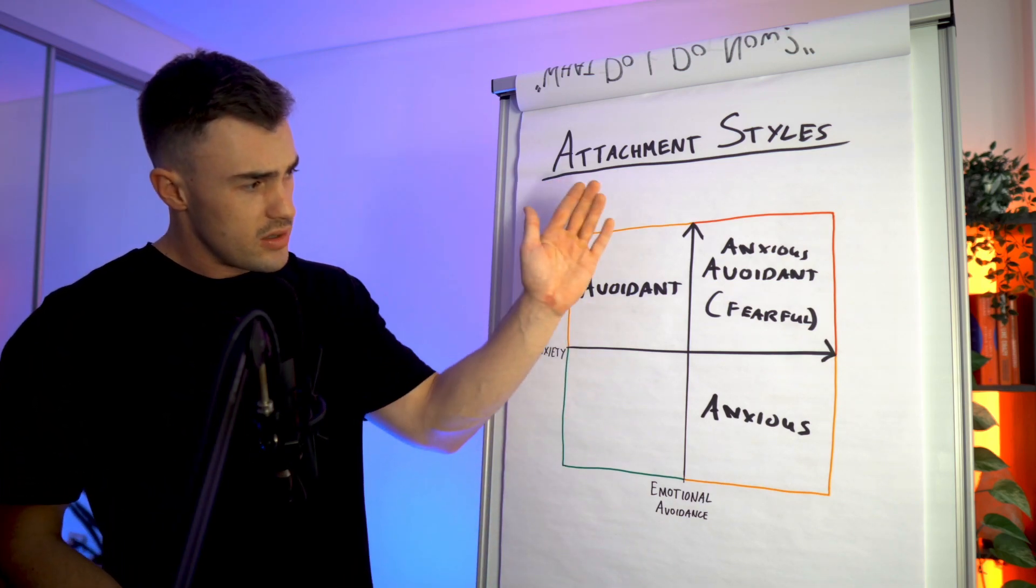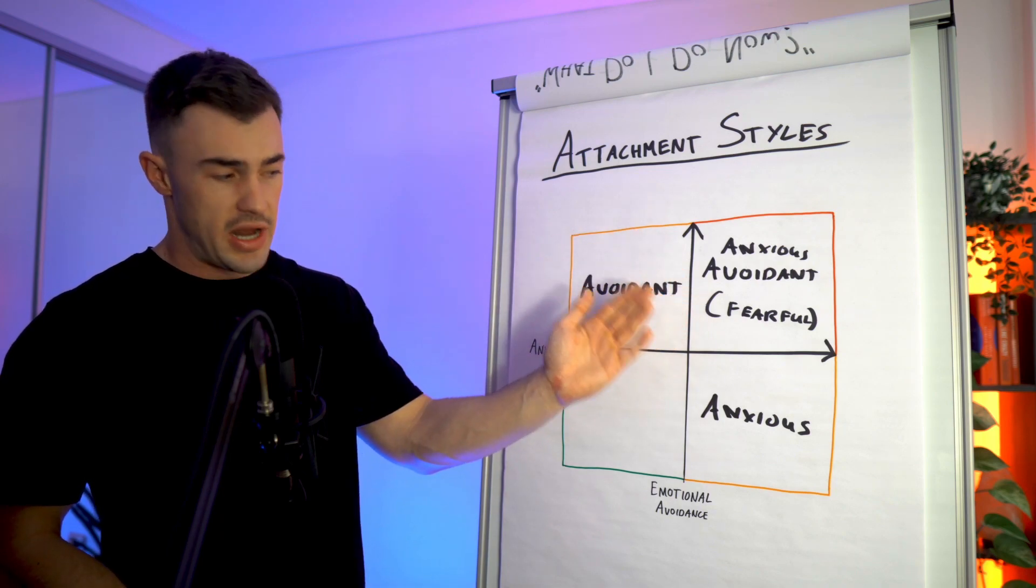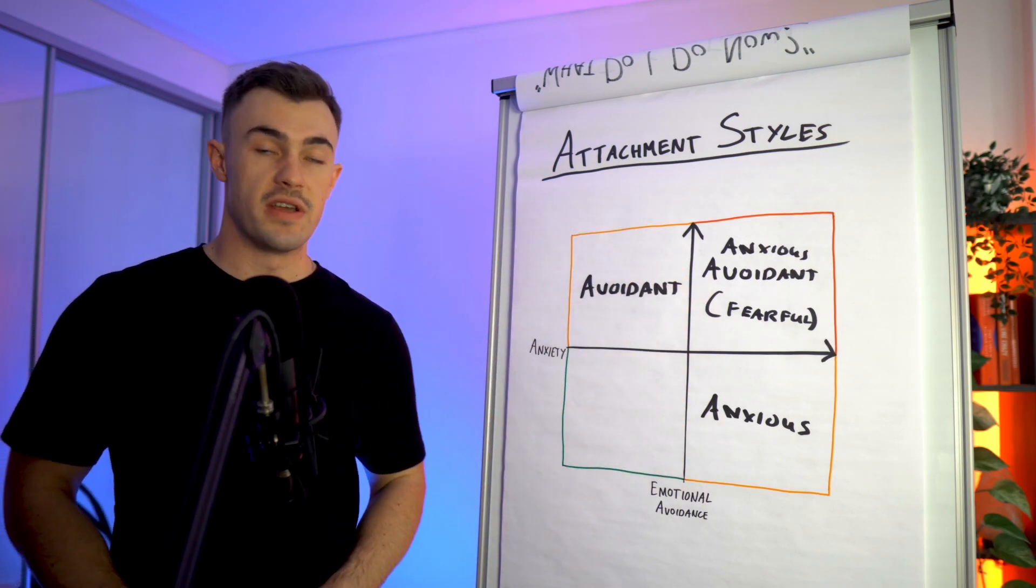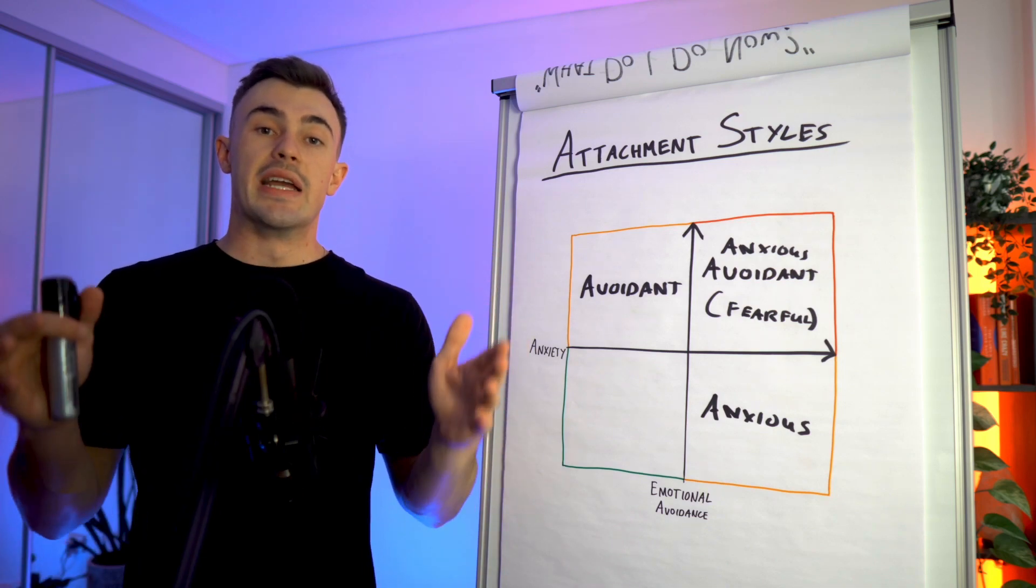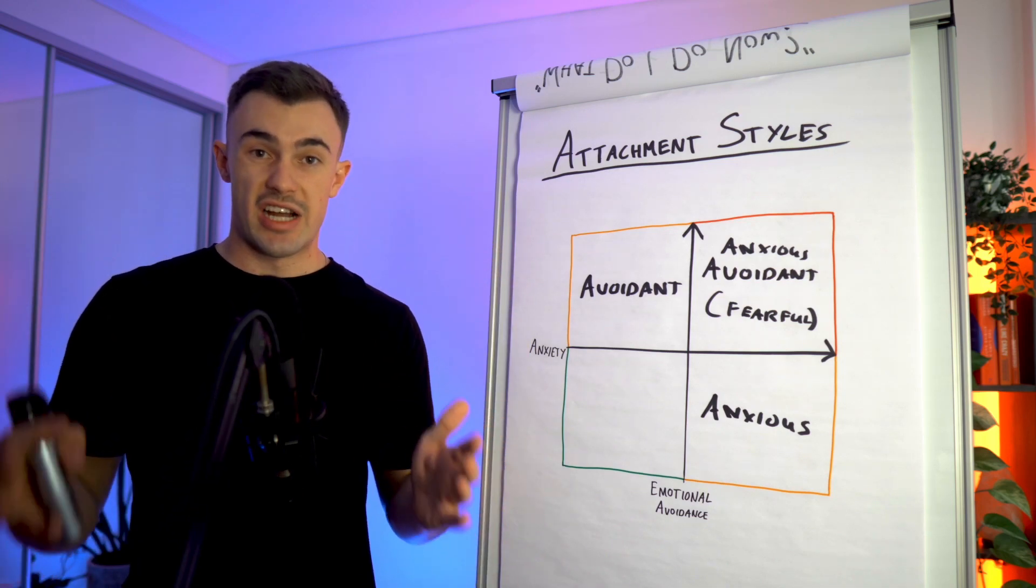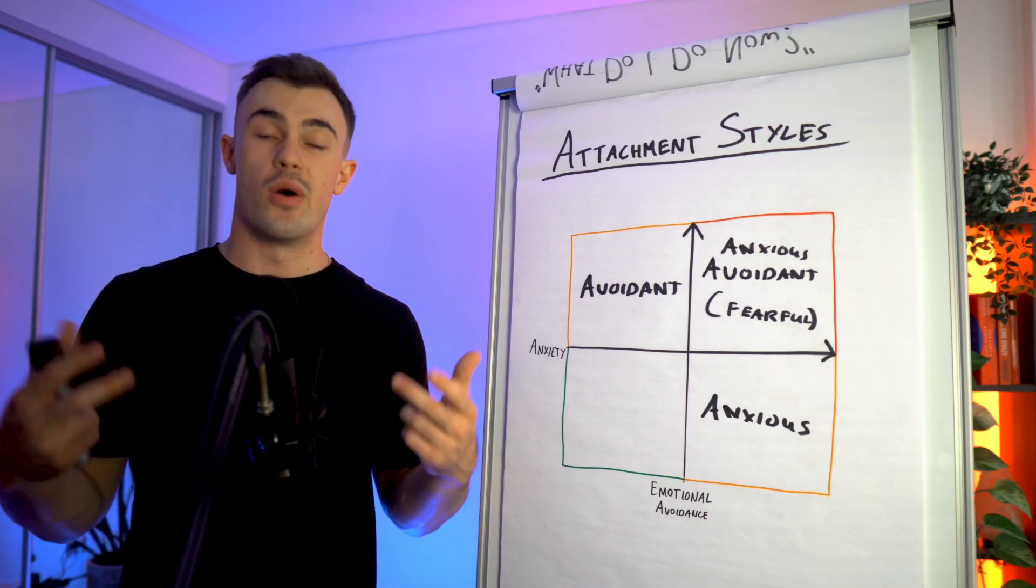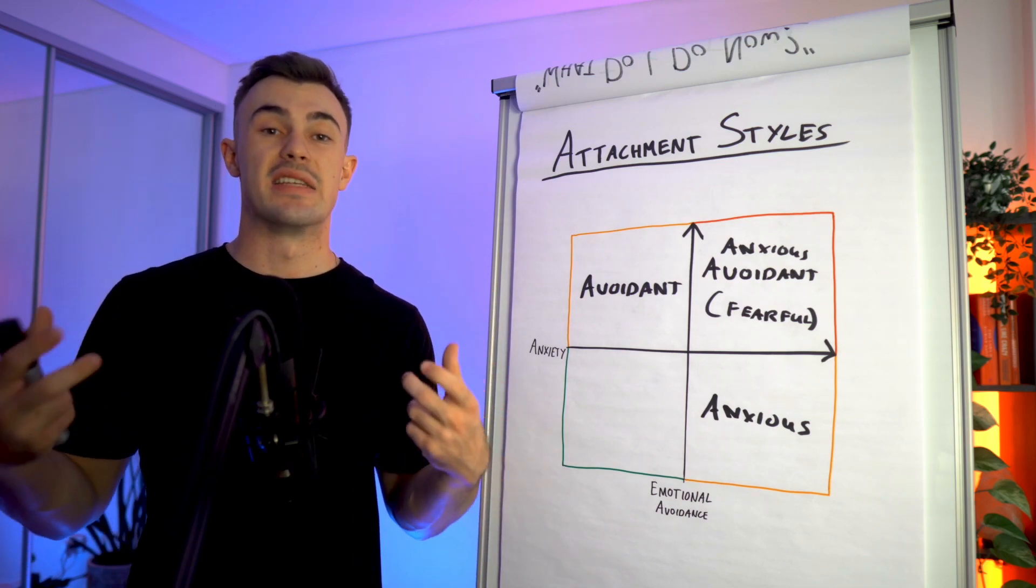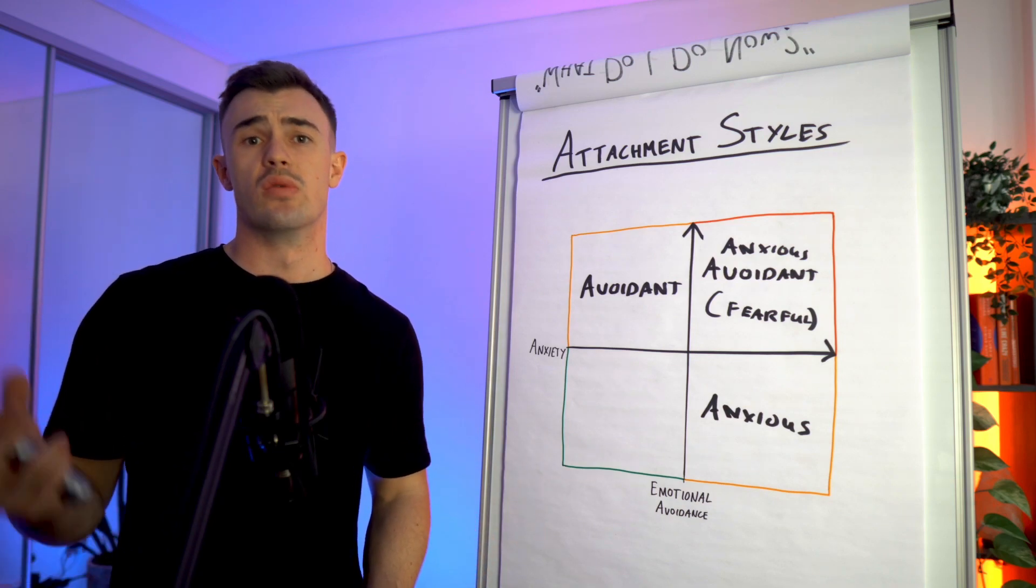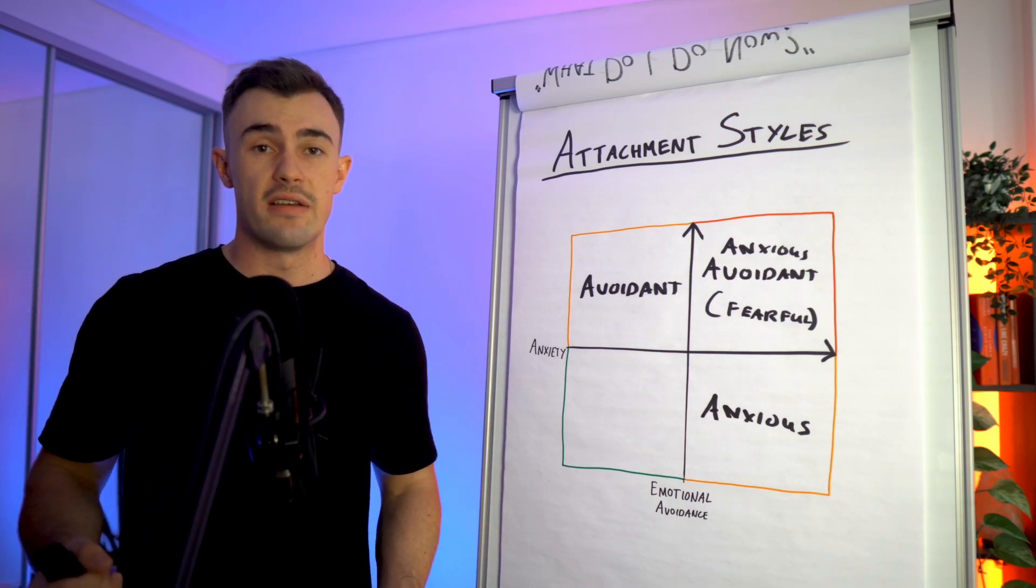So if you are an anxious avoidant, an anxious or an avoidant type, or I guess I should refer to this as a fearful type, there is a way to transcend these attachment styles and overcome the symptoms that you are experiencing in your relationship and ultimately repair your ability to connect deeply with people without feeling like you either are fearful that they're going to leave or anxious that they're going to leave.